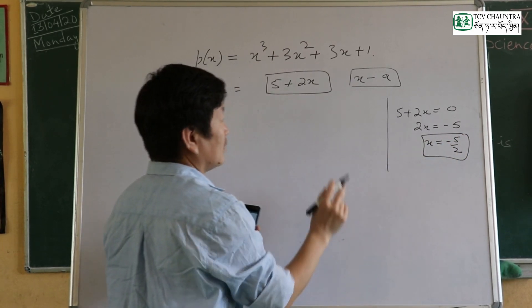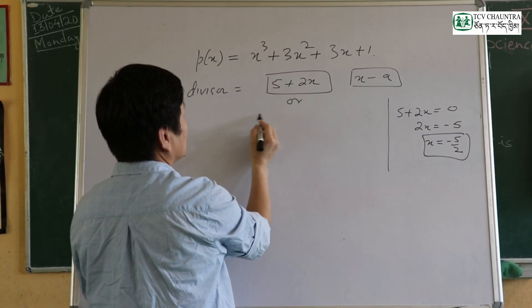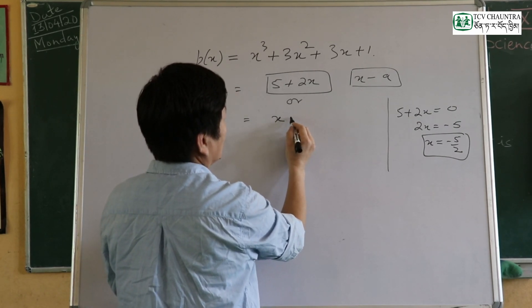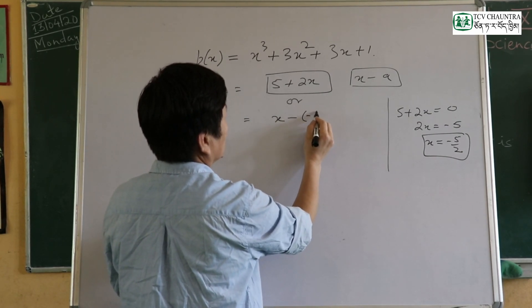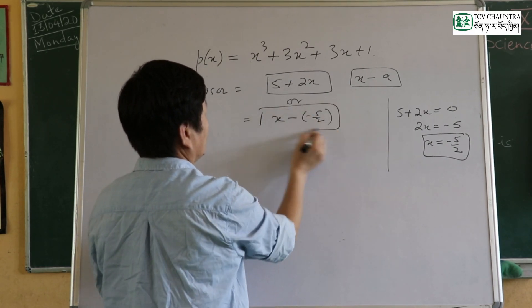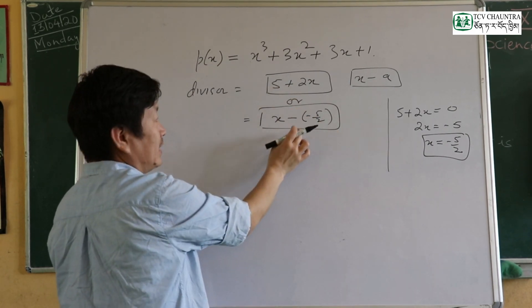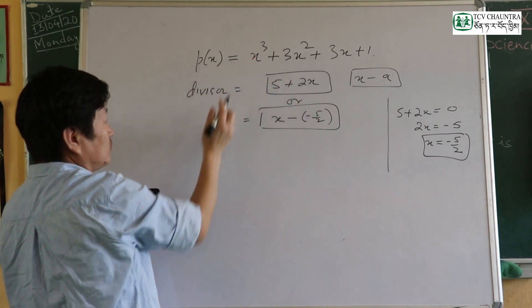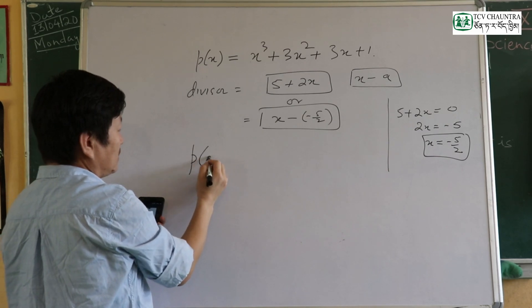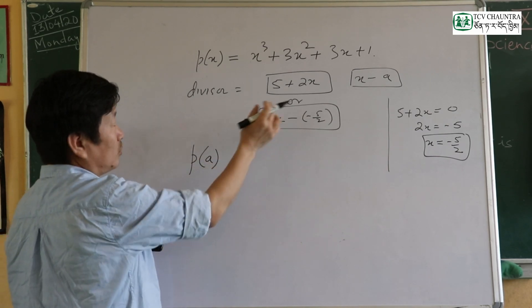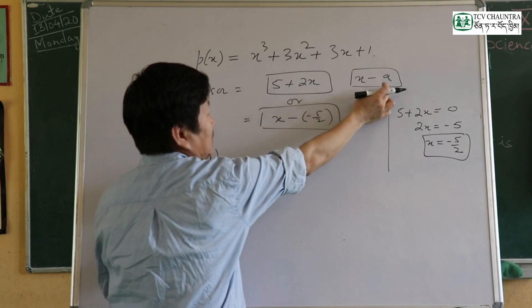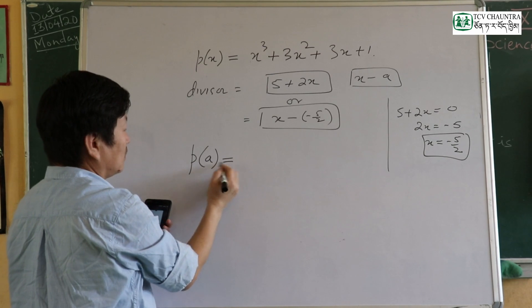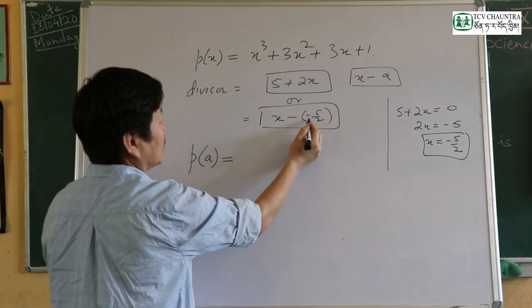So x minus a — where a is the same — then we use the remainder theorem. The remainder when dividing by x minus a is p(a). That gives us a equals negative 5 over 2.